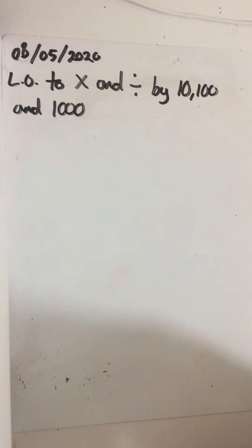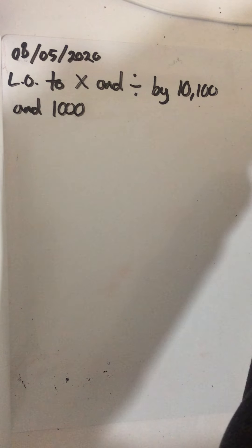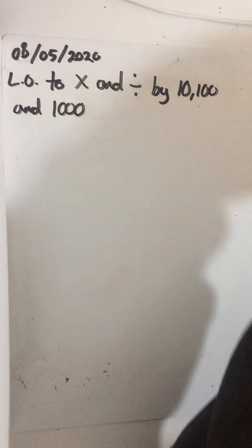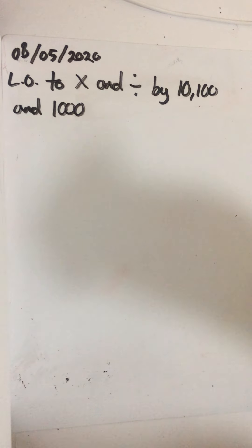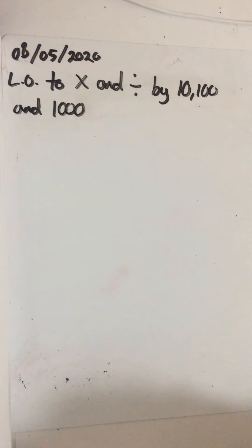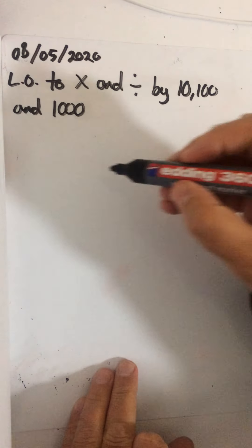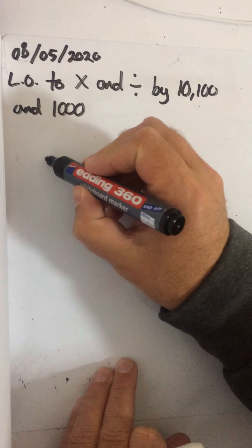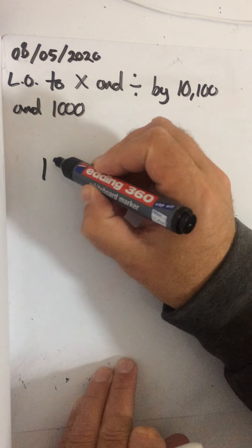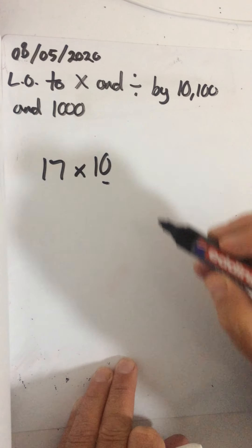So as you can see we're going to multiply and divide by 10, 100 and 1,000. It's really important this, because it's amazing how many pupils I've taught in year seven and year eight who can't do this accurately. It's really important to get it done now. So first of all, a whole number is nice and easy when you're multiplying. So if you've got something like 17 times 10, you just add the zero.